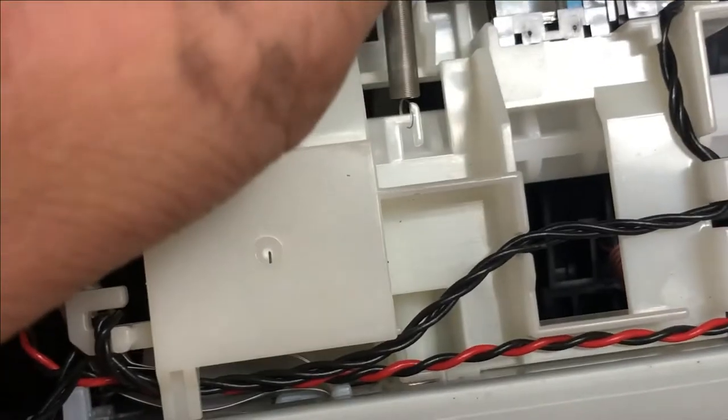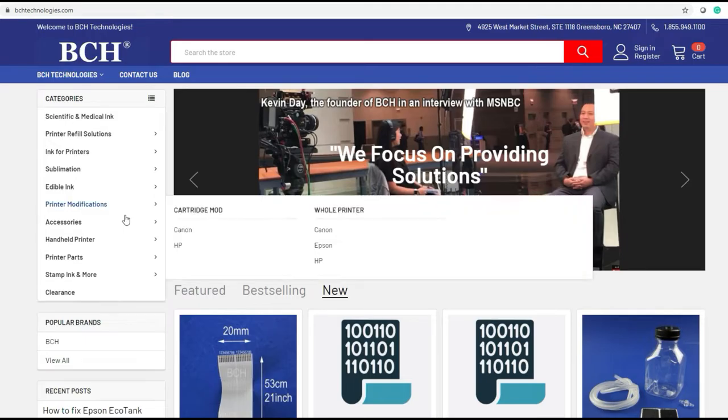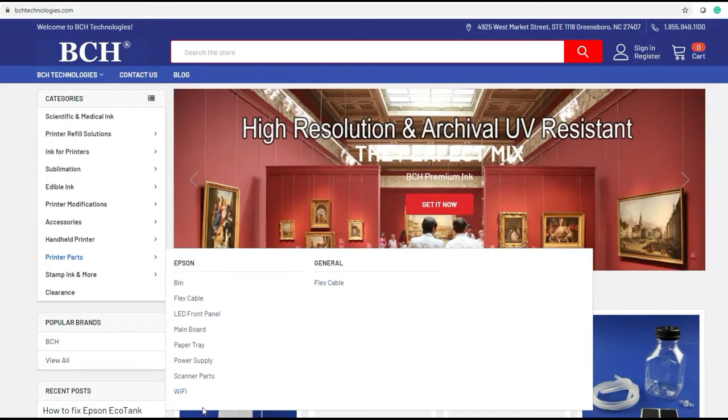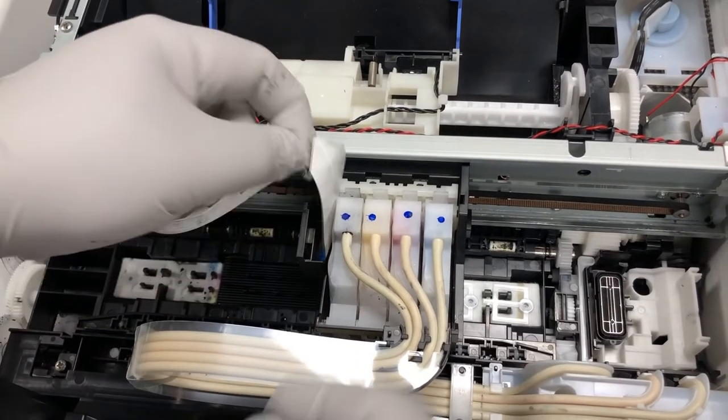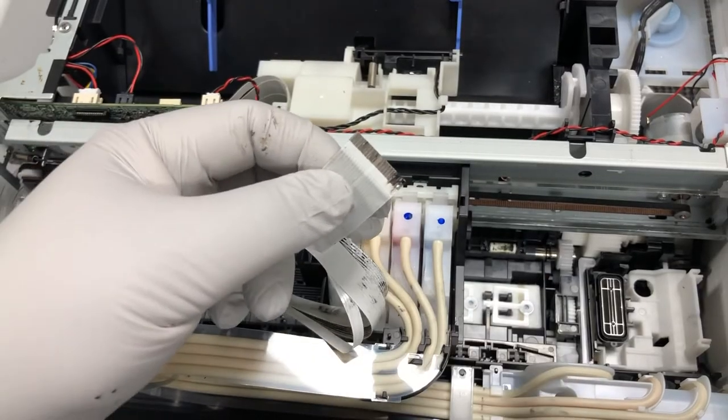We're going to keep the motherboard and we're going to switch to a new printhead. For the cable, you can go to bchtechnologies.com or go to printer parts. You can either go to a general flex cable or you can go to Epson flex cable. Let me show you a way that you can reuse this cable without buying a new one.